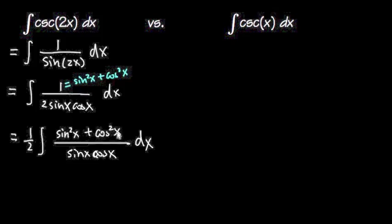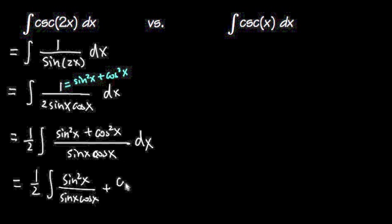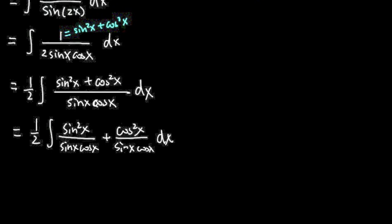And here we have two things on the top, over sine x cosine x as the whole thing on the bottom. So I can separate the fractions. So I will get 1 half integral sine square x over sine x times cosine x plus cosine square x over sine x cosine x dx like this. And now, the good thing happens because we can cancel out this sine right here and one of the sine on the top. And for the second fraction, I can cancel out the cosine here and then one of the cosine on the top.